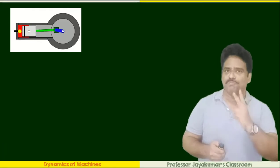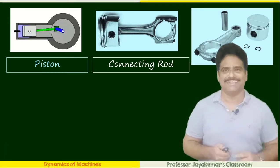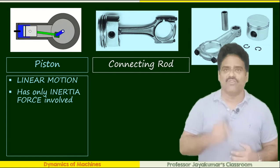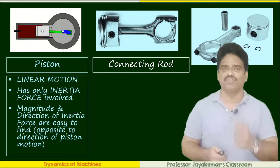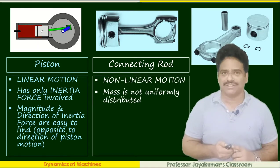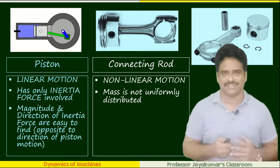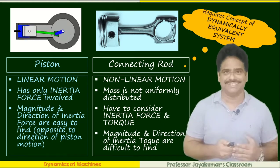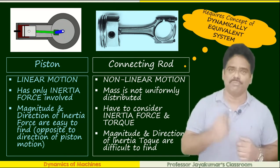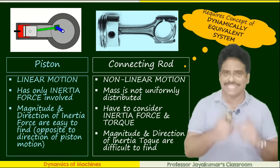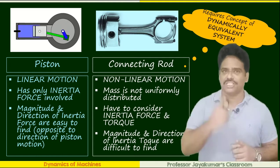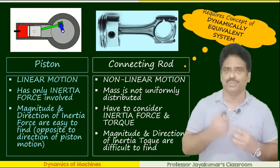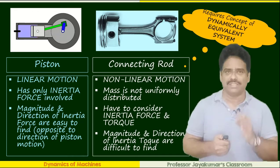The two important parts of an IC engine are the piston and the connecting rod. The piston has linear motion — to and fro, translational motion — for which it is easy to determine the inertia force. Unlike the piston, the connecting rod has distributed mass and its motion is also not linear. In fact, it is a general plane motion — a combination of rotation and translation. In such cases, it is difficult to determine the inertia torque acting on the connecting rod directly. So we need one additional concept: the dynamically equivalent system.